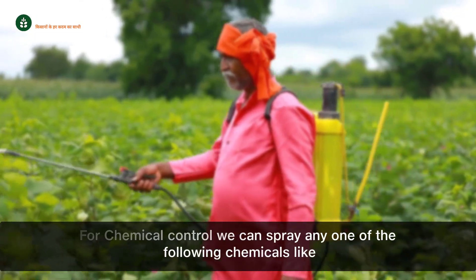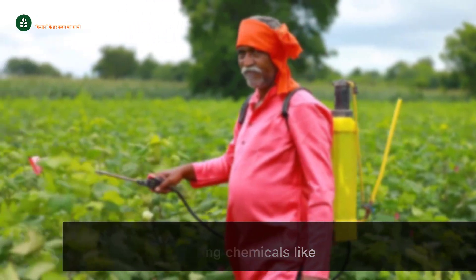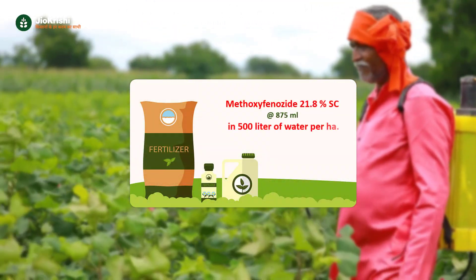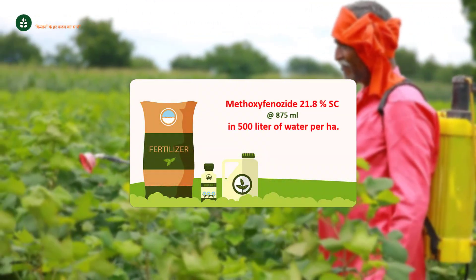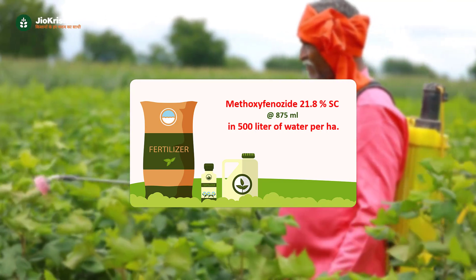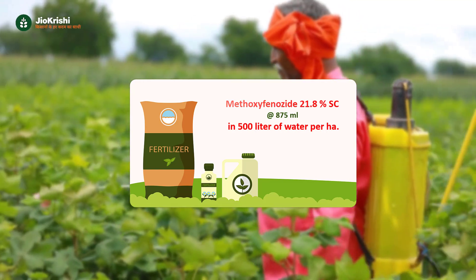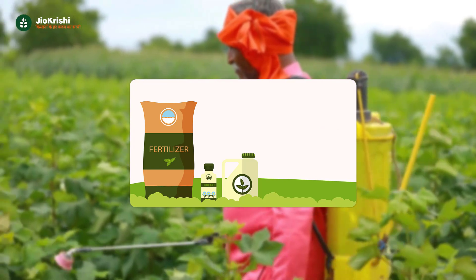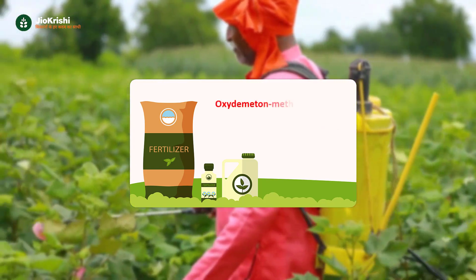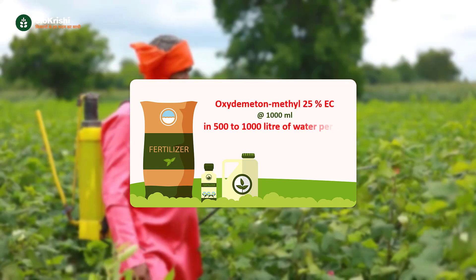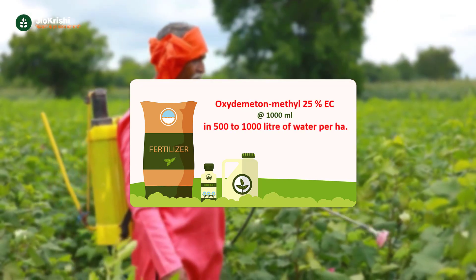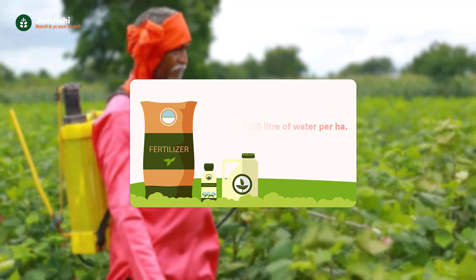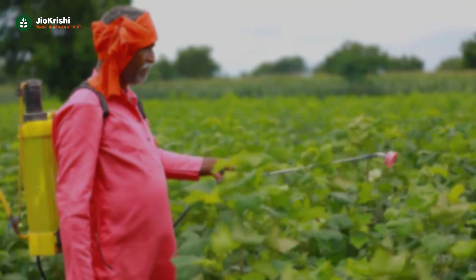For chemical control, spray any one of the following: methoxyphenazide 21.8% SC at 875 milliliters in 500 liters of water per hectare, or oxidimitin methyl 25% EC at 1,000 milliliters in 500 to 1,000 liters of water per hectare.